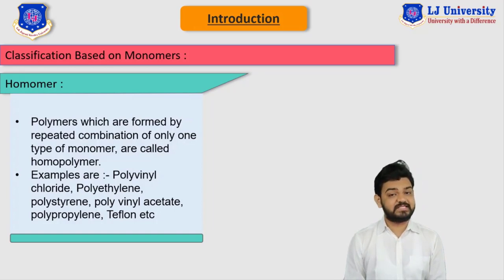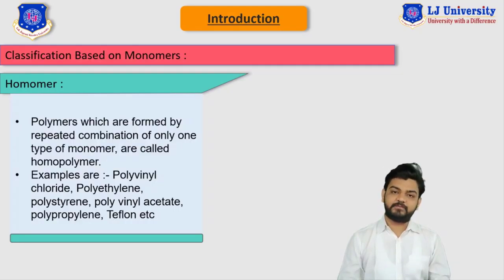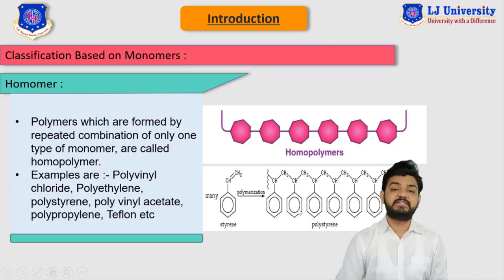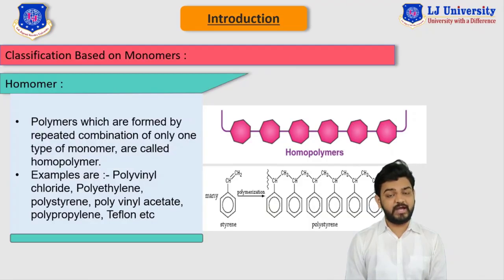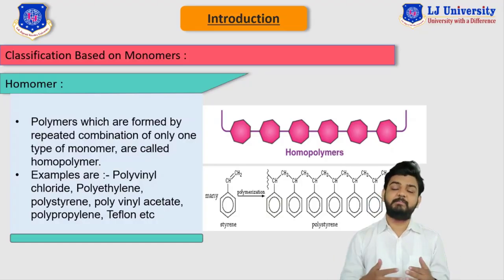Here on screen, you can see examples of homopolymers such as polyvinyl chloride, polyethylene, polystyrene, polyvinyl acetate, and Teflon. Here in this image, you can see the structure of a homopolymer, where this pink section is the same or repeating monomer joined together to form the homopolymer. In this structure, we have used styrene — so this styrene monomer continuously repeats to form the polymer called polystyrene.